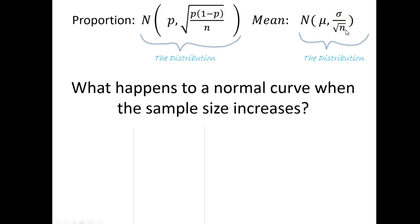So when sample size increases, something interesting happens. If my normal curve looks like this, say I have a super small sample size, what's going to happen to this normal curve when the sample size grows?